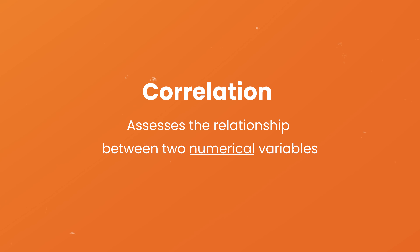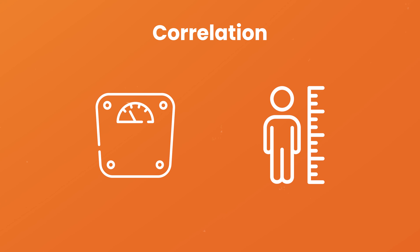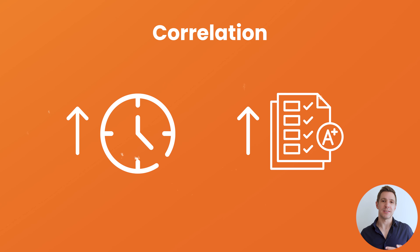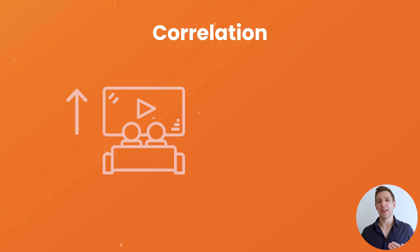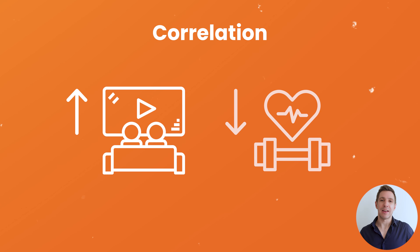Now let's kick things up a notch and talk about correlation analysis. Correlation analysis looks at the relationship between two numerical variables — for example, someone's height or weight — to assess whether they move together in some way. In other words, whether an increase in the value of one variable is likely to be accompanied by an increase or decrease in the value of another variable. Correlation assesses whether there's a statistically significant relationship between two numerical variables. For example, you might find a positive correlation between the number of hours students spend studying and their average exam scores. Similarly, a correlation analysis may reveal a negative relationship between the amount of time spent watching TV and physical fitness levels.